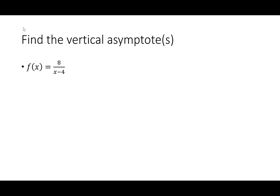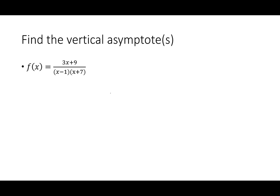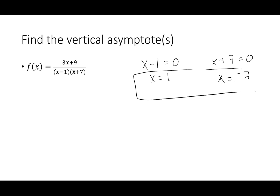Let's find vertical asymptotes. For f(x) = 8/(x-4), this feels like the domain steps — the big difference is you set the denominator equal to zero. We use VA as shorthand for vertical asymptote. Setting x-4=0 gives x=4. Super important: write it as an equation of a line — say x=4, not just 4. For f(x) = (3x+9)/((x-1)(x+7)), I get two VAs: x-1=0 gives x=1, and x+7=0 gives x=-7. There's no limit to how many vertical asymptotes you can have.